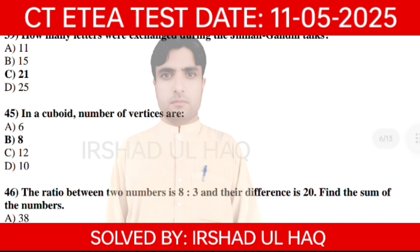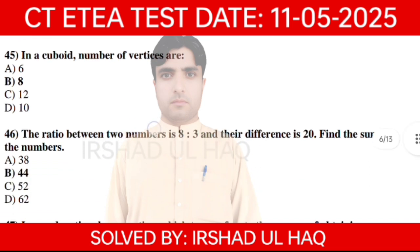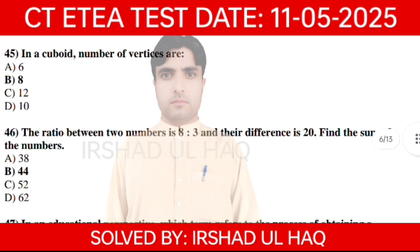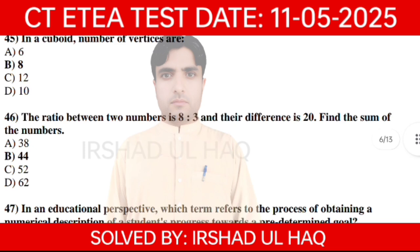Question: An octahedron has how many vertices? Option number B: 8. The ratio between two numbers is 8:3 and their difference is B. Find the sum of the numbers. Option number B: 44.